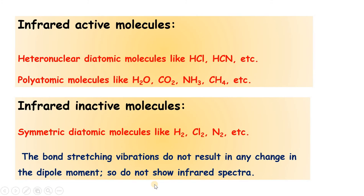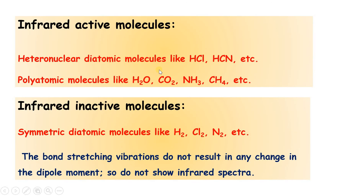Now let us see what types of molecules can absorb infrared radiation or produce an infrared spectrum. Heteronuclear diatomic molecules like HCl and HCN, and polyatomic molecules like H₂O, CO₂, NH₃, and CH₄ — all these types of molecules produce a change in dipole moment during vibration. Such molecules can show an infrared spectrum and are called infrared active molecules.